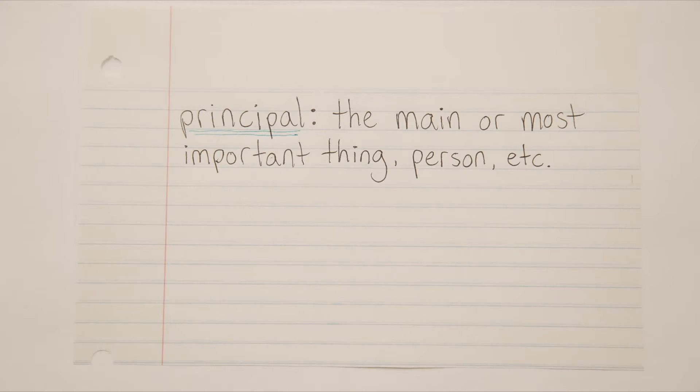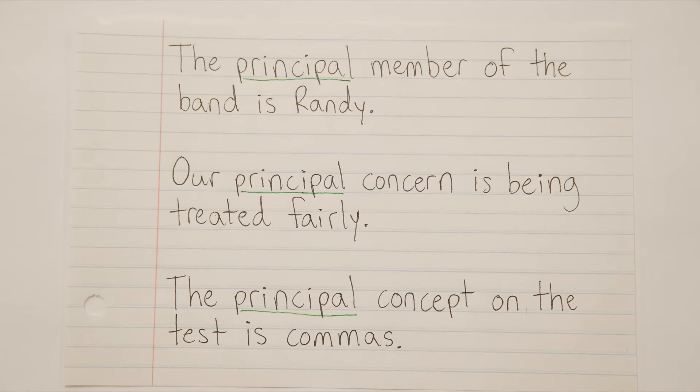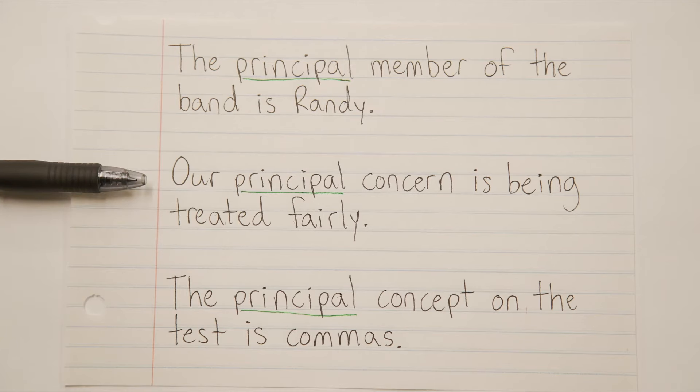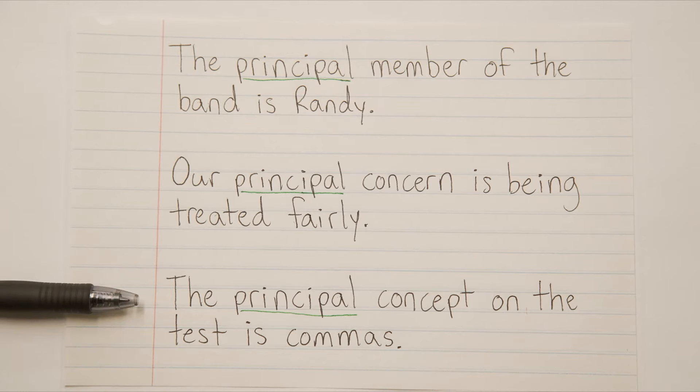The other use for that same word, principal P-A-L, is the main or most important thing, person, etc. And that should make sense because the principal is typically the main or most important person in a school, right? So anyway, how would we use principal P-A-L in that second way? Well, how about this? The principal member of the band is Randy, meaning that Randy is the main or most important member of the band. Or our principal concern is being treated fairly, as in that's our main concern. Or the principal concept on the test is commas. It's the main topic, the main thing that's going to be covered, right?